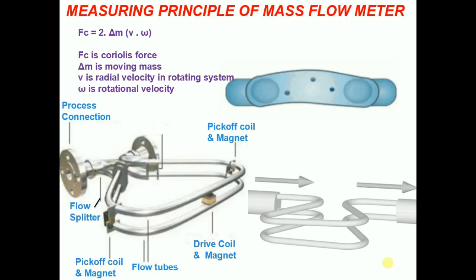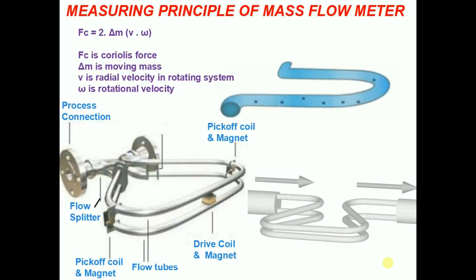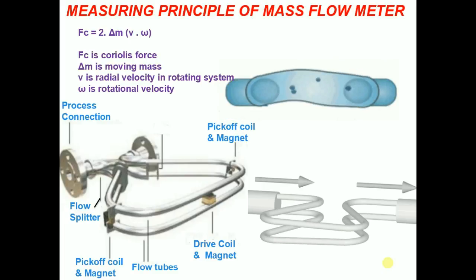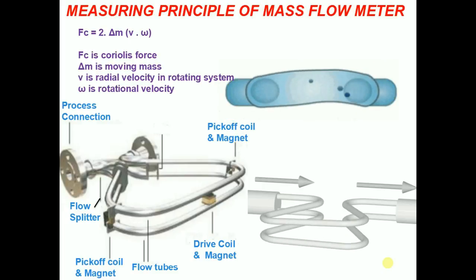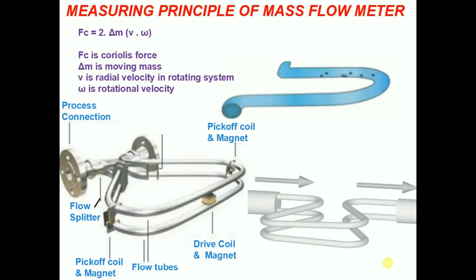When fluid is moving through the sensor's tubes, Coriolis forces are induced causing the flow tubes to twist in opposition to each other.